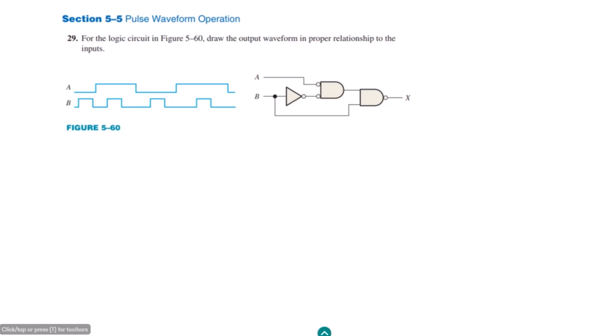Welcome back guys, I hope you will be fine. This is section 5.5 which covers pulse waveform operations in digital logic circuits, and this is question 29 which we have to solve. For the logic circuit in figure 5.60, we need to draw the output waveform in the proper relationship to the inputs. These are the input waveforms and this is the logic circuit.